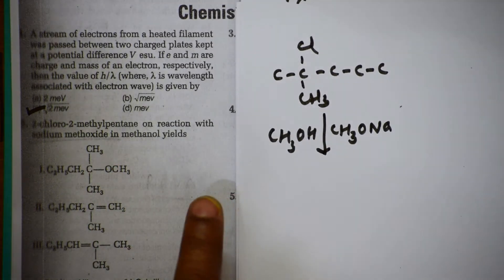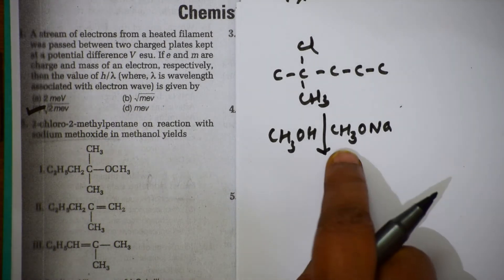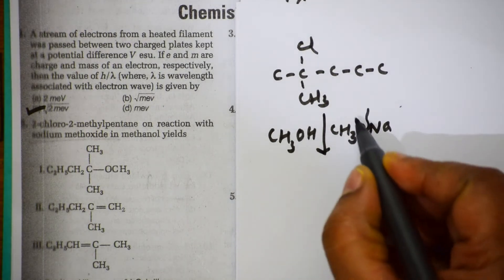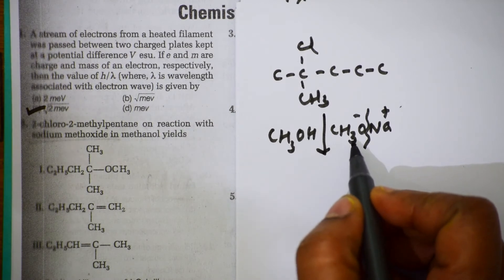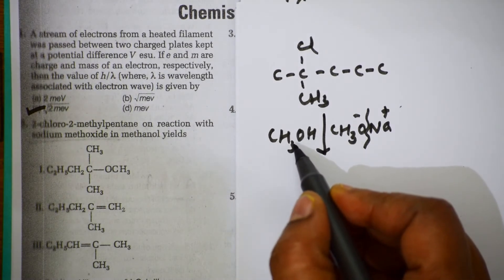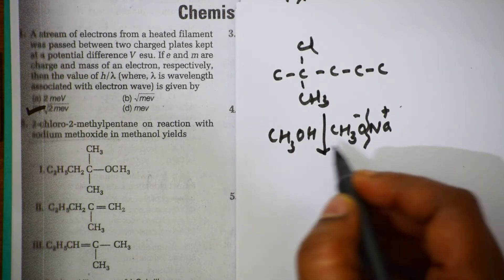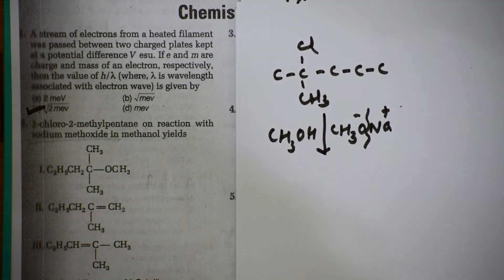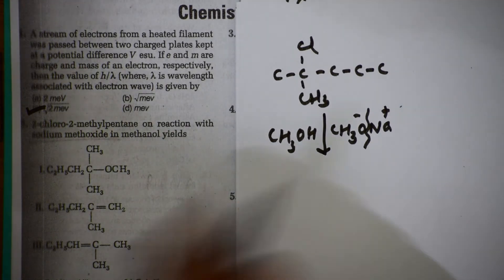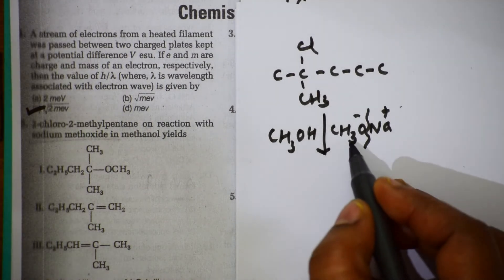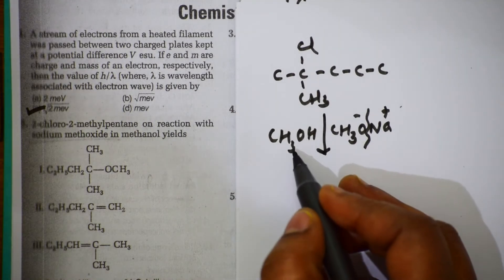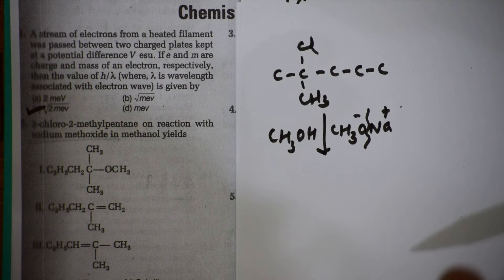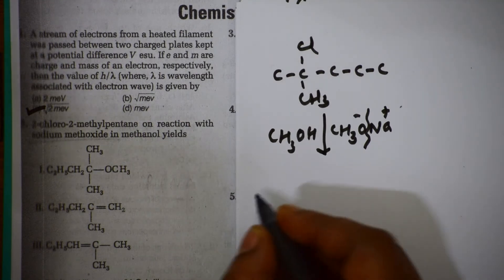The key thing to remember: methoxide (CH₃O⁻) is a very strong nucleophile, and methanol is a polar solvent. With a strong nucleophile and a polar solvent, elimination will dominate over substitution. You have to remember that — elimination dominates substitution here.